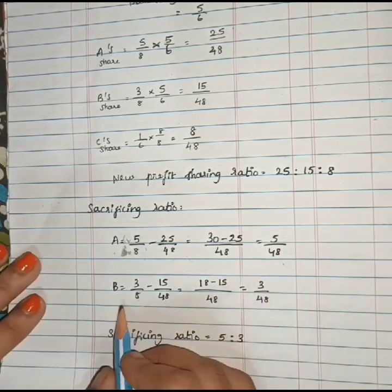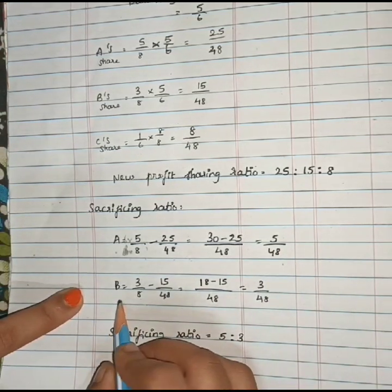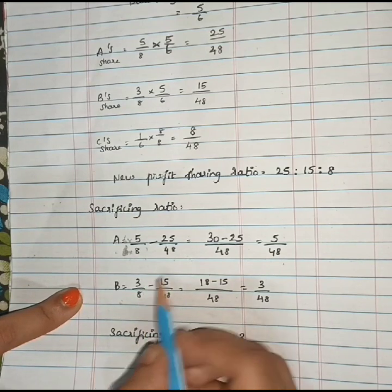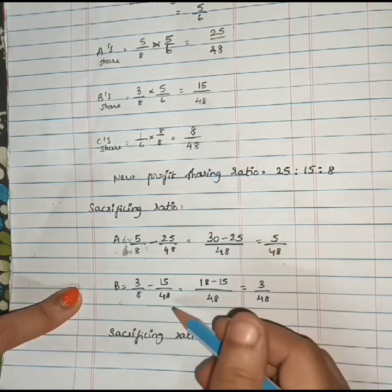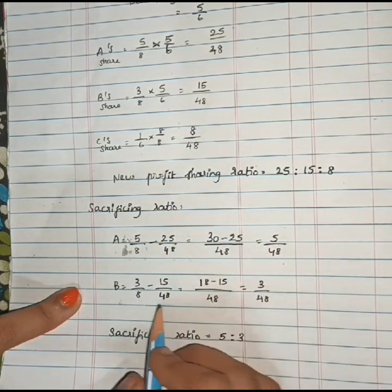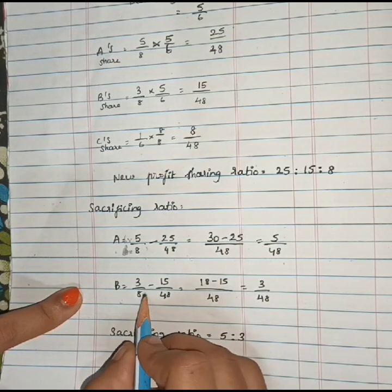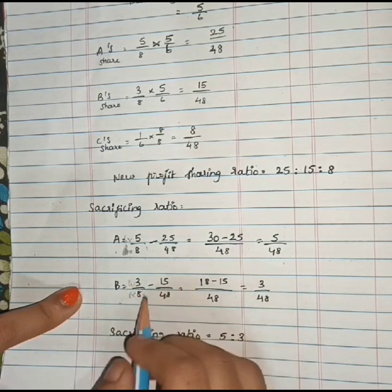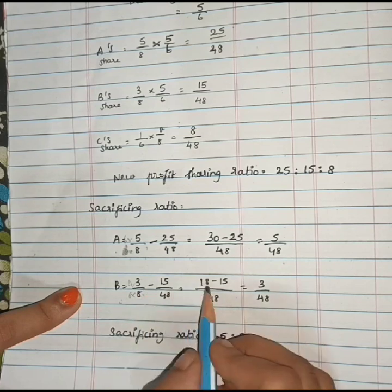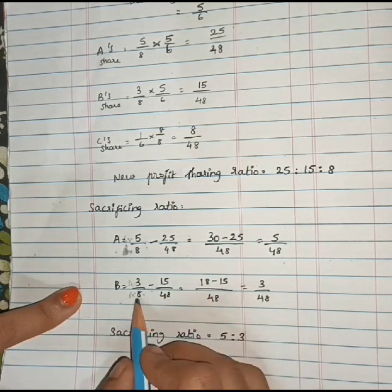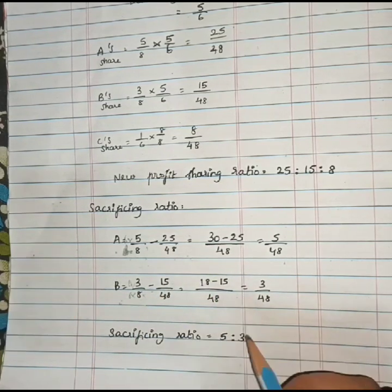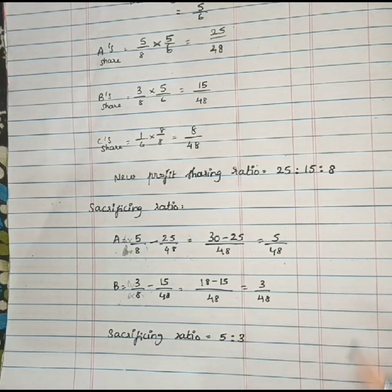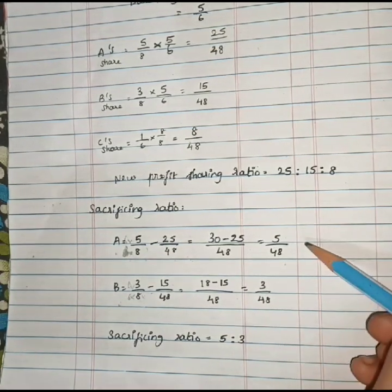B's sacrificing ratio: B's old share is 3/8 minus new share of 15/48. Converting: 3/8 = 18/48. So 18/48 minus 15/48 equals 3/48. Therefore, the sacrificing ratio is 5:3.